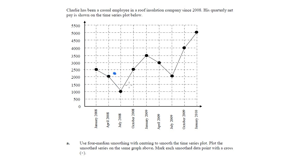Now I look at the next group of four going along. The middle of them going across is between the second and the third, somewhere along here. And going up the page, halfway between the second and the third going up the page is where the median will be. So we end up with it there.